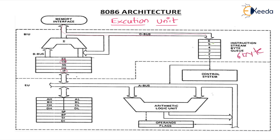The size of the queue is 6 bytes. BIU waits for 2 bytes — that means 16 bits — to fill the queue, not just 1 byte. If only 1 byte is free, the data will not transfer to the queue. If the queue is empty for 2 bytes, then only the data will be transferred through the instruction queue.